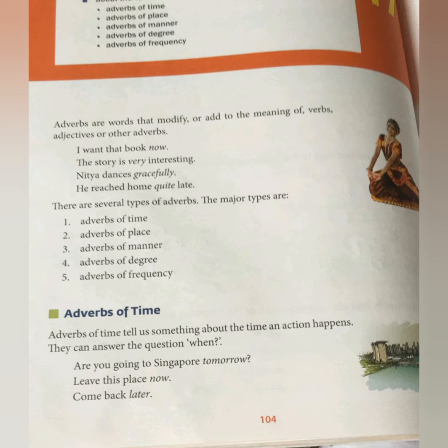Now there are several types of adverbs. The major types given in our textbook are: adverbs of time, adverbs of place, adverbs of manner, adverbs of degree, and adverbs of frequency. Learn them in this order — time, place, manner, degree, frequency. We will be discussing all five major types.